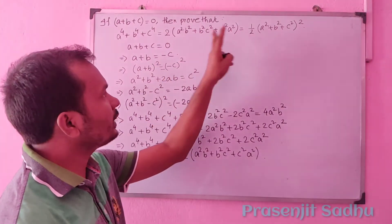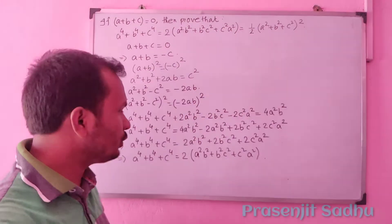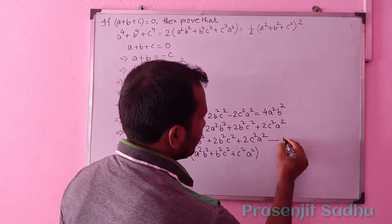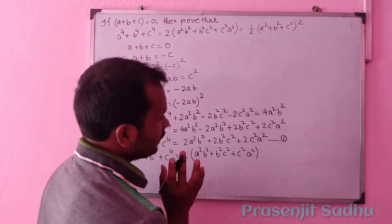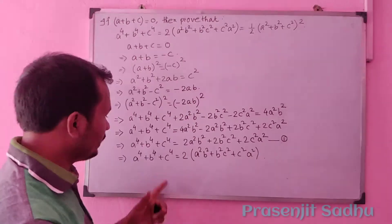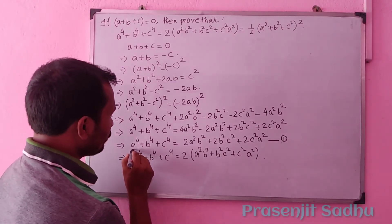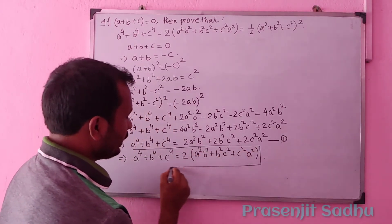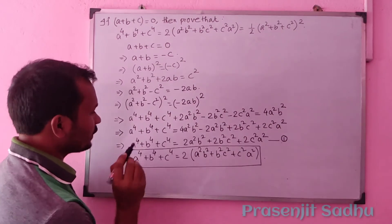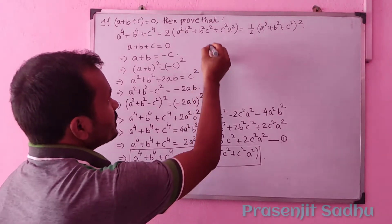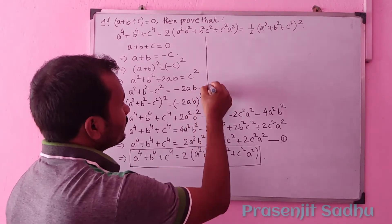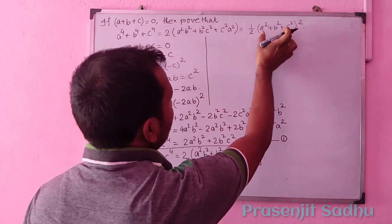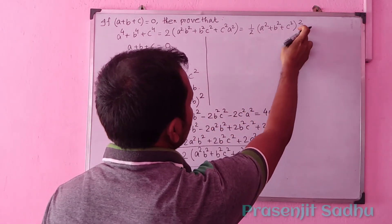Now we have proved that the first part equals the second part. Let's prove either the first equals the third or the second equals the third. The third expression to prove is half of (a² + b² + c²) whole square.